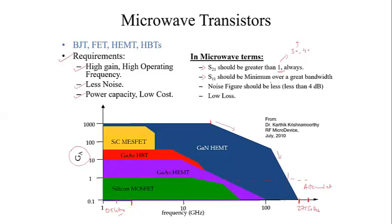The S11 is supposed to be as low as possible over the given bandwidth, which tells about the matched property. So this is actually gain.